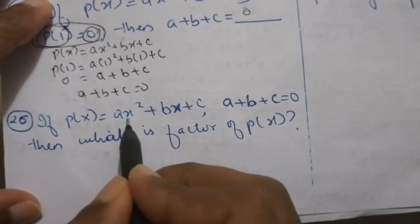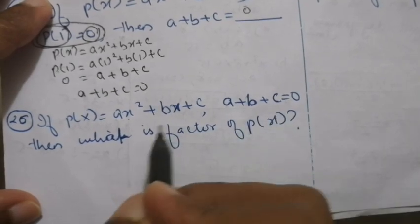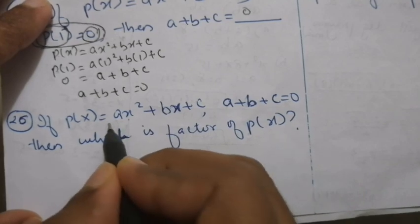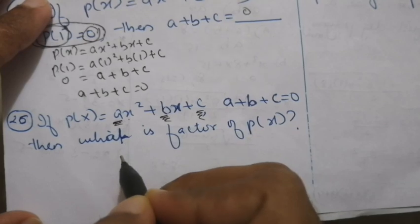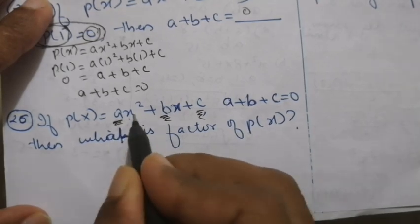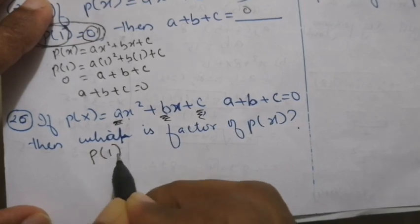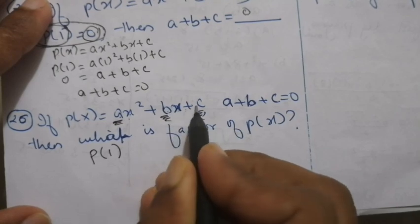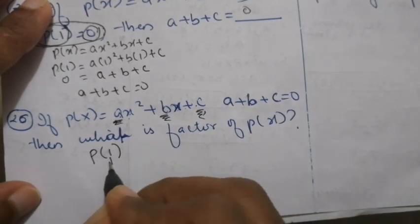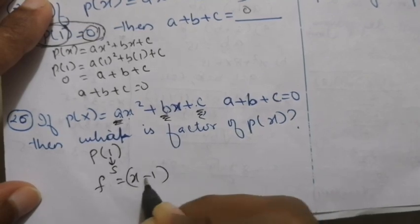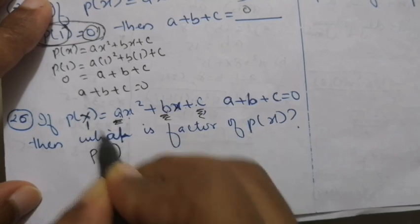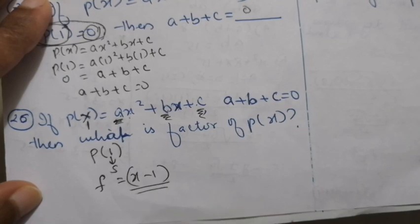Now if p of x equals ax squared plus bx plus c and a plus b plus c equals 0, what is a factor of p of x? We know a plus b plus c corresponds to substituting x equals 1, that is a times 1 plus b times 1 plus c. So x equals 1 is the solution, which means the factor is x minus 1.